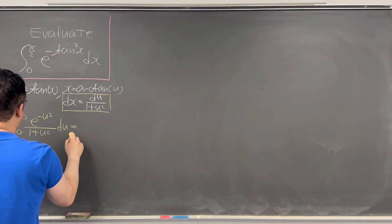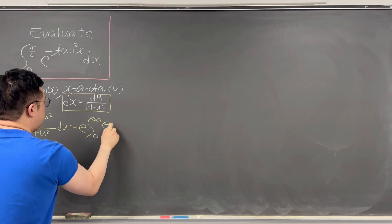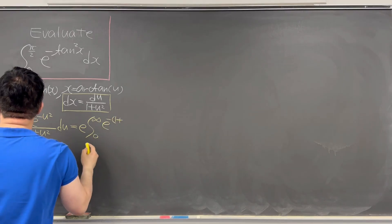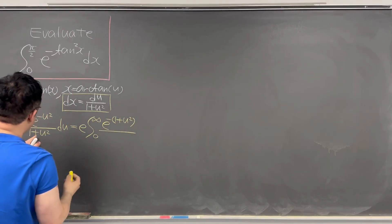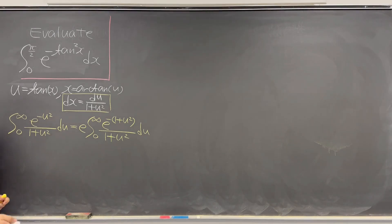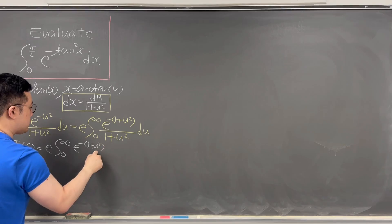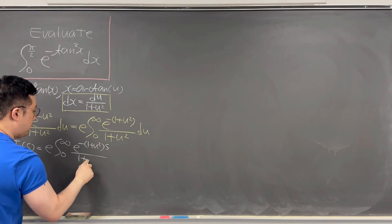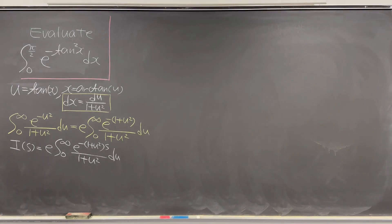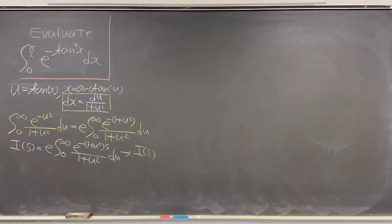We can pull out the e term. This becomes e times the integral from 0 to infinity of e to the power of negative parentheses 1 plus u squared over 1 plus u squared, du. I'll be calling this I(s) — specifically e times the integral from 0 to infinity of e to the power of negative 1 plus u squared times s over 1 plus u squared, du. We want I(1).